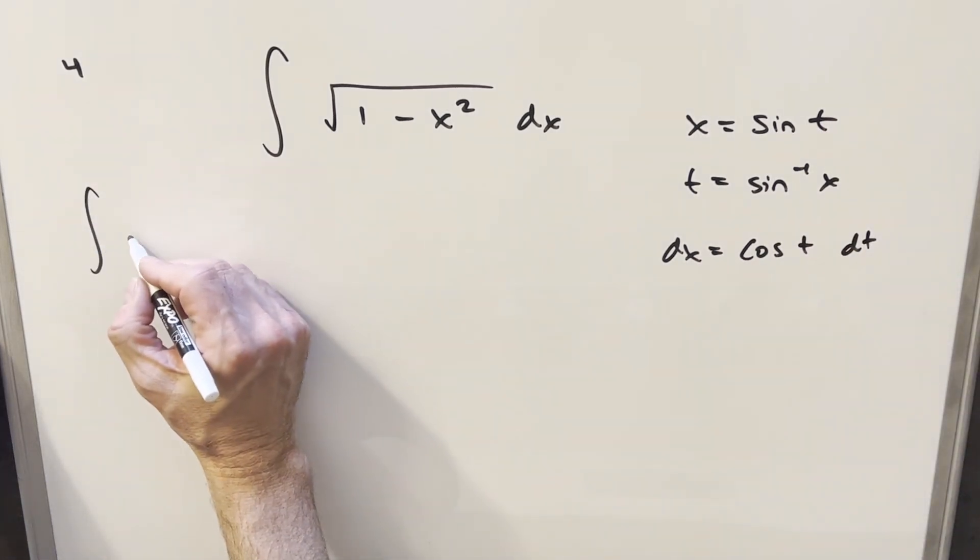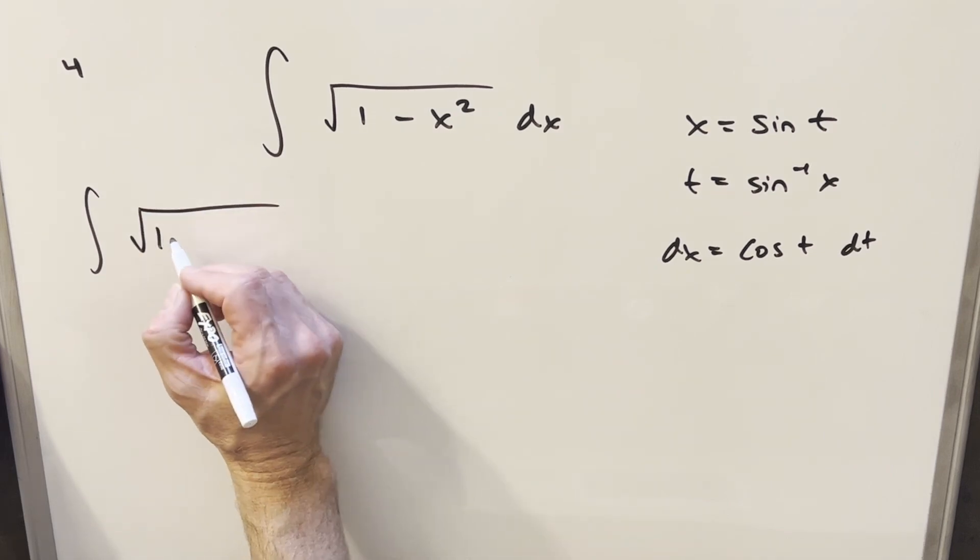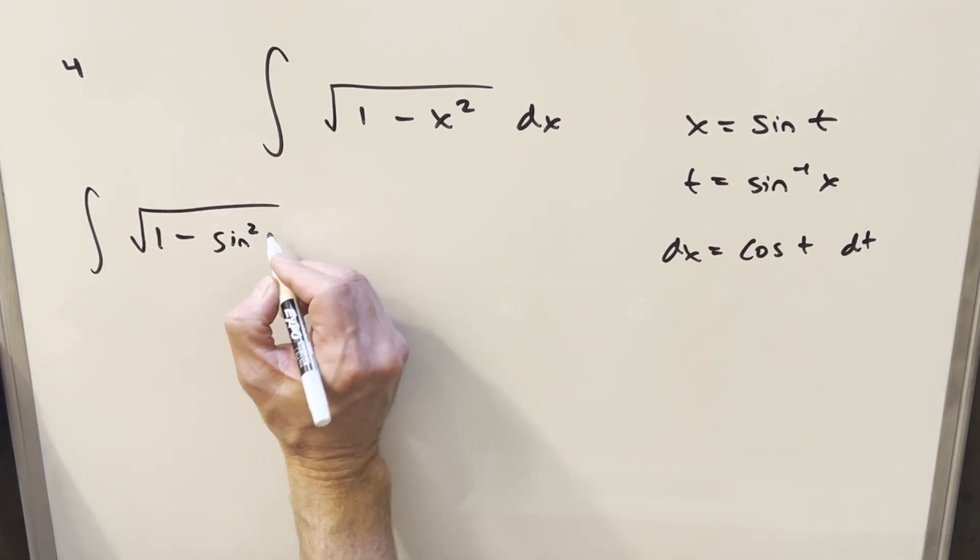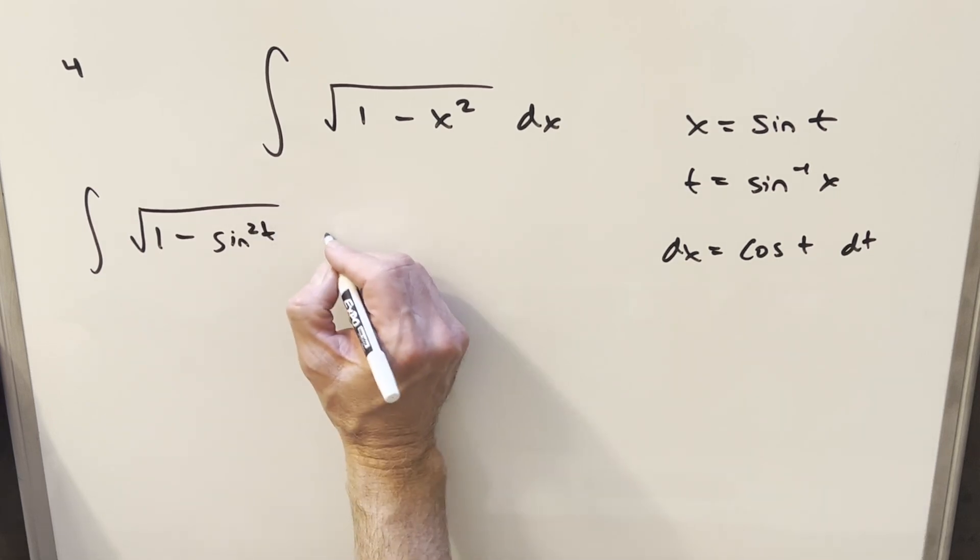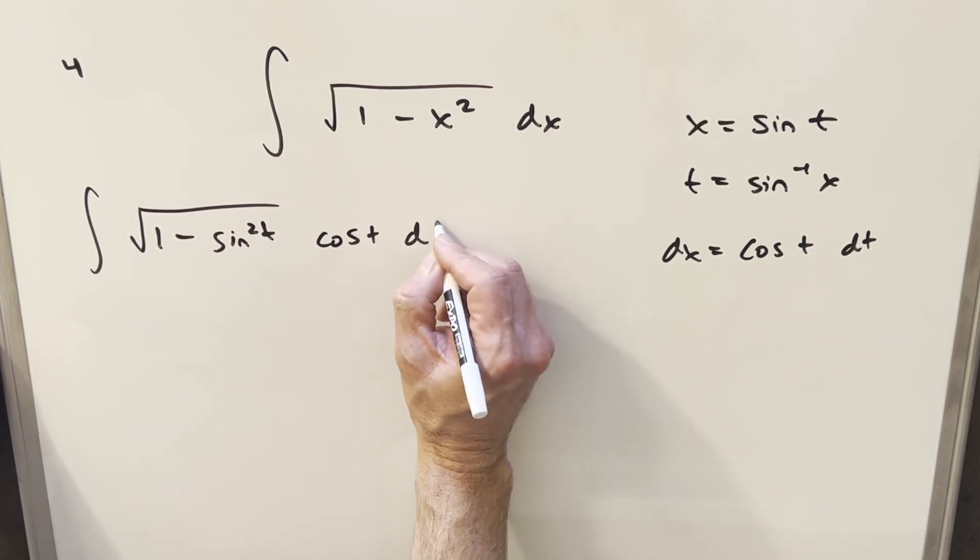So then I'll go ahead and make our substitution. Now we're going to have square root of 1 minus, this is going to become sine squared t, and our dx is going to be all this stuff, which is cosine t dt.